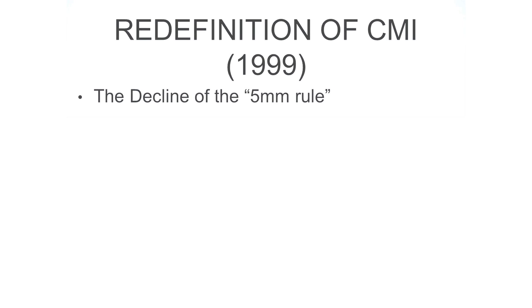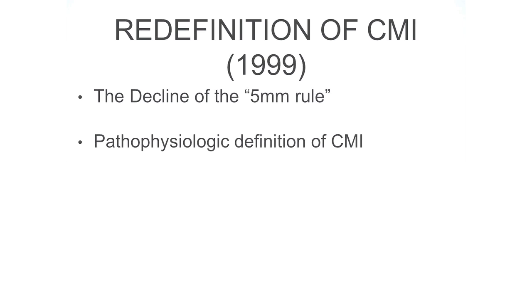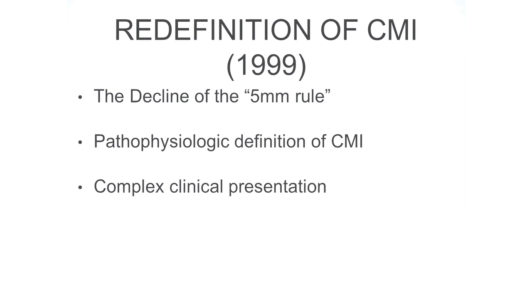Several key findings emerged. First, the 5mm rule was utterly nonsensical — there were patients with 25-30mm herniation with zero symptoms, and some with 3mm with the same symptoms and surgical positive response. Second, a new definition of Chiari was given on pathophysiologic grounds: the bone in the posterior fossa is small, and that's the driving force. Up to that point, the only recognized symptom was the tussive headache — headache aggravated by coughing, straining, and lifting — and any other symptom, doctors simply brushed patients off.